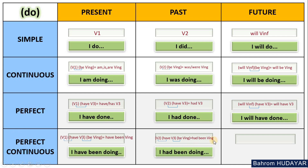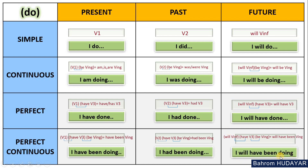Future Perfect Continuous: future — 'will + verb infinitive' — perfect — 'have + verb three' — continuous — 'be + verb-ing.' The infinitive form of 'have' is 'have', and the third form of 'be' is 'been', so: 'will have been + verb-ing.' Full sentences: 'I will have been doing', 'you will have been doing', 'she will have been doing.'